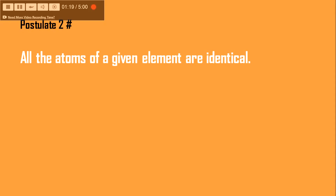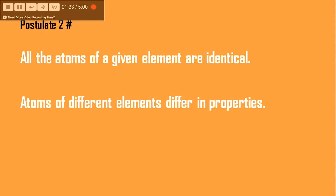The next postulate states that all the atoms of a given element are identical. For example, all the atoms present in the element gold will be identical — they will be similar in mass and properties, just identical to each other.